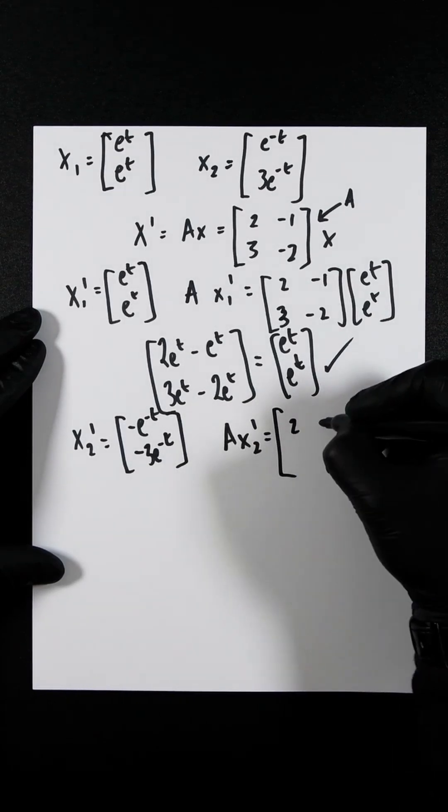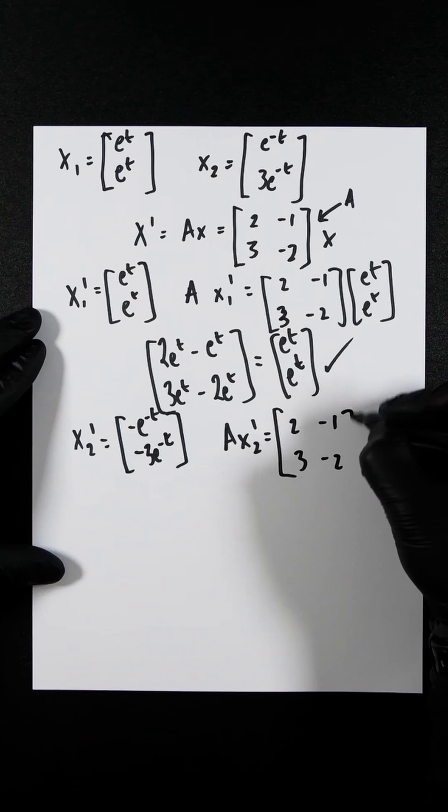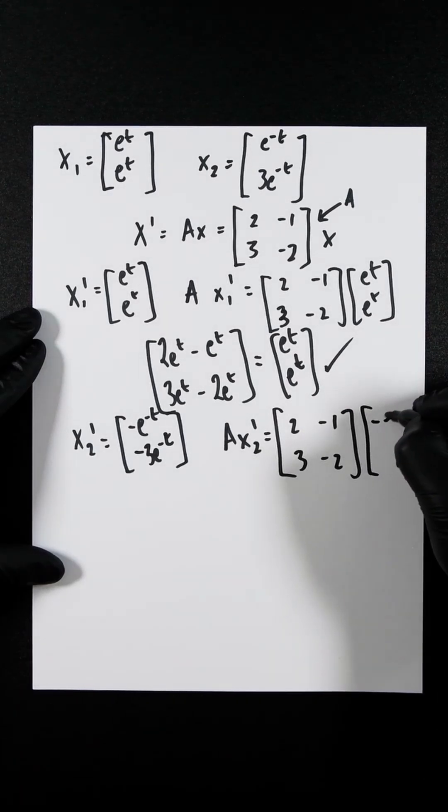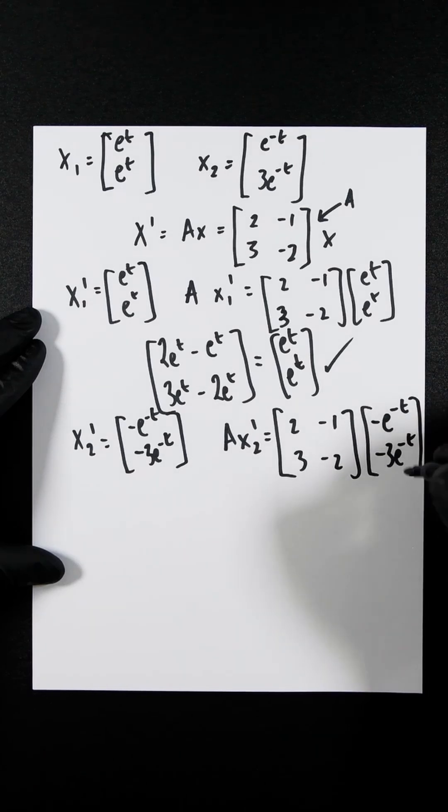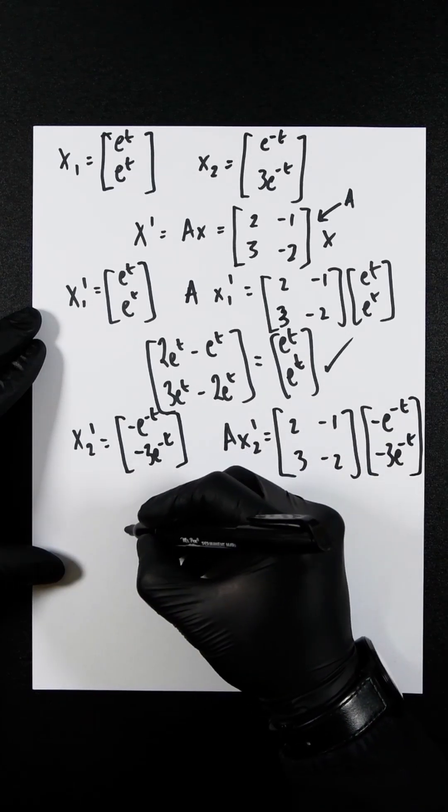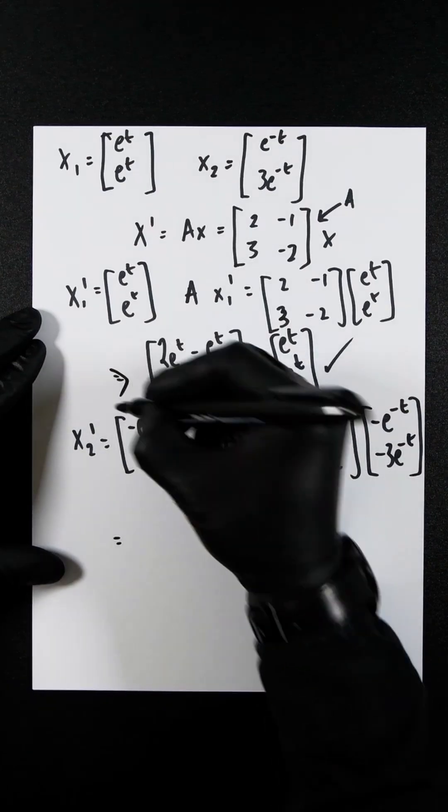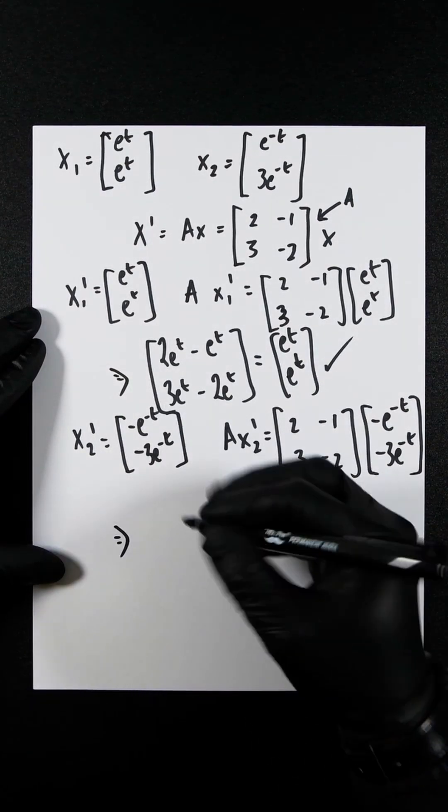So you're going to get 2 minus 1, 3 minus 2, minus e to the minus t, minus 3e to the minus t. You expand that out. Well, you should then have put a little, let's make it look a little neater.